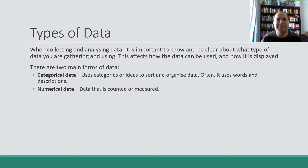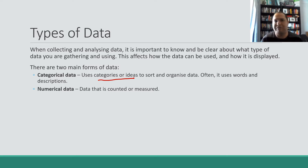Data comes in two broad forms. The first is called categorical data. Categorical data uses categories or ideas to sort and organize data — we're looking here for descriptions. For example, the color of cars that go through an intersection would be categorical data because you're looking for data about colors, words, descriptions, and categories.